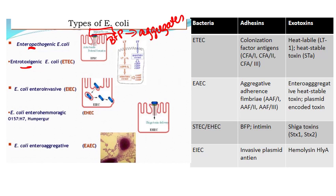Enterotoxigenic E. coli is associated with travelers more than anybody else. It has both adhesive factors and exotoxins: colonization factors (CFA) allow it to attach to cells, and then there are two toxins — a heat-labile toxin known as LT1, and a heat-stable toxin known as STA. This STA is not a shiga toxin — you won't get bloody diarrhea with this one, just watery diarrhea.